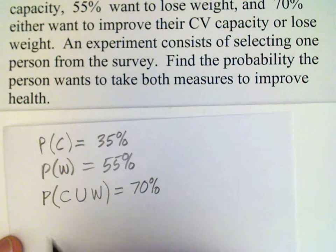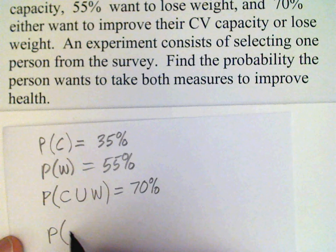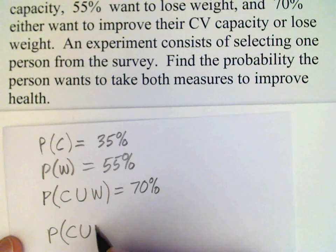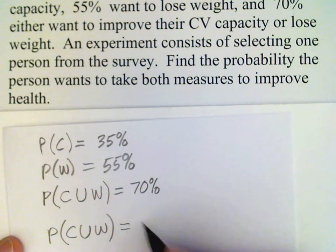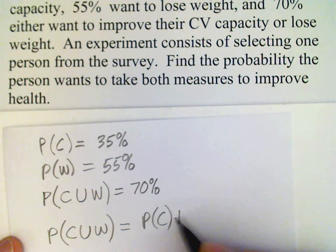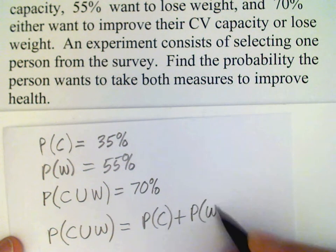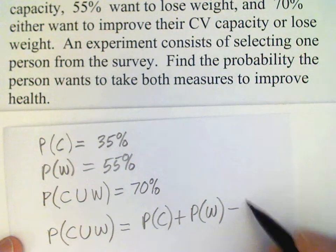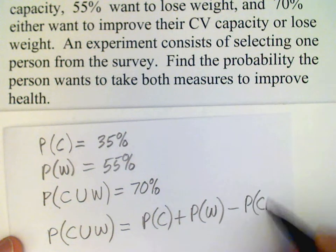So we know that those four quantities relate to each other, so all we have to do is substitute into our formula. Probability of C union W is equal to the probability of C plus the probability of W minus the probability of C intersect W.